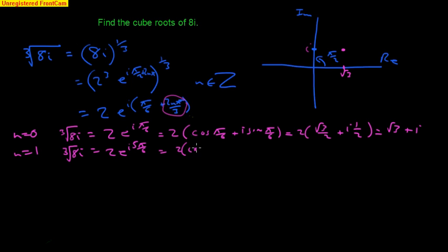2 cos 5 pi by 6 plus i sine 5 pi by 6 equals 2 into negative root 3 on 2 plus i times 1 half. Negative root 3 plus i. Negative root 3 is over here. There we go. There's our second one.